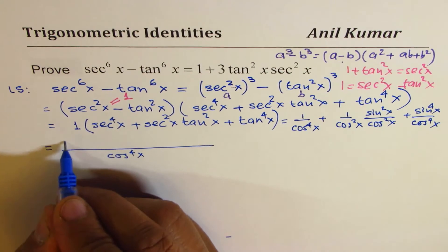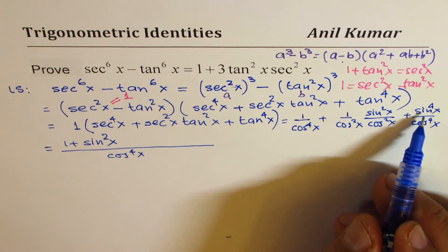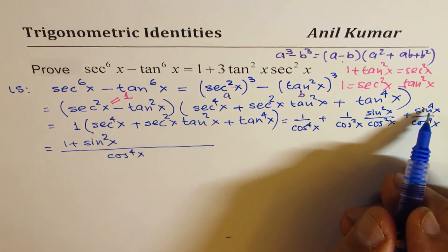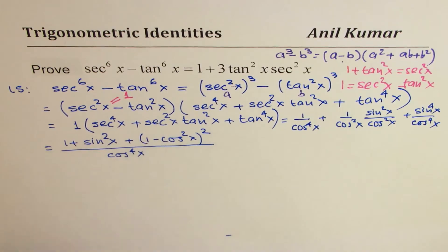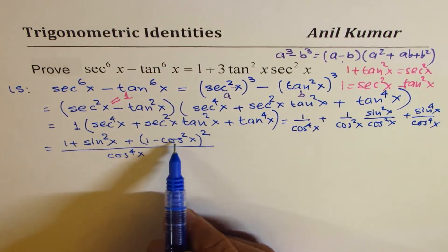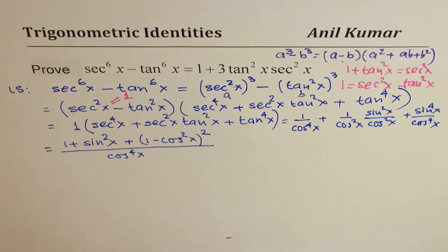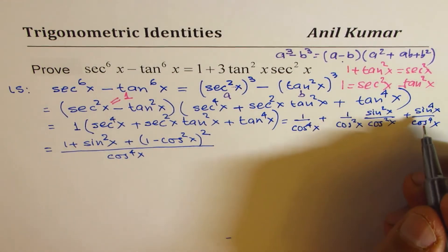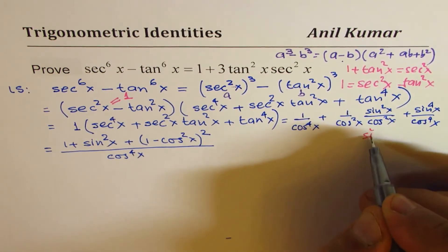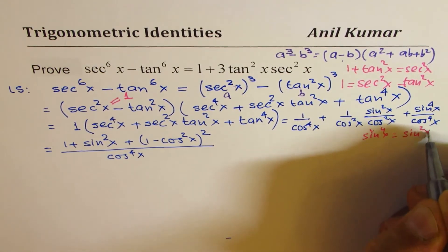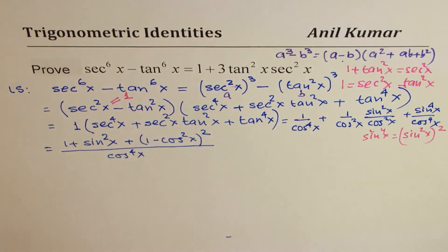We write cos to the power of 4x as a common denominator. The numerator is 1 plus sine squared x plus sine to the power of 4x. Now, sine to the power of 4x can be written as 1 minus cos squared x whole squared, since sine squared x equals 1 minus cos squared x, and squaring gives sine to the power of 4x.